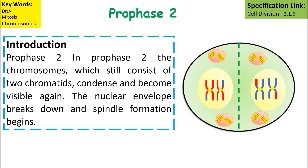In prophase two, the chromosomes — which still consist of two chromatids — condense and become visible again. The nuclear envelope breaks down and spindle fibre formation begins.